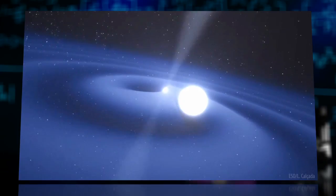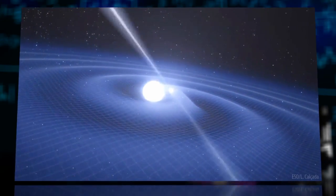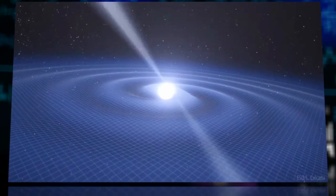The pair emits gravitational waves, and the binary star system ever so slowly loses energy, making the stars move closer together and orbit faster.